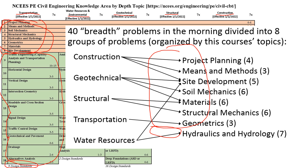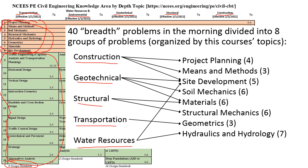Digging into a little more detail on the breadth information: if you take an exam before April 2024, these are the 40 breadth problem topics. Depending on the discipline you're working in, these topics relate to the NCEES specifications — project planning, means and methods, and so on — and they do relate back to those disciplines.